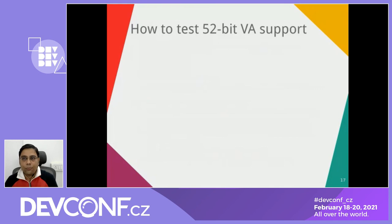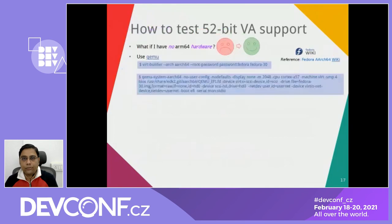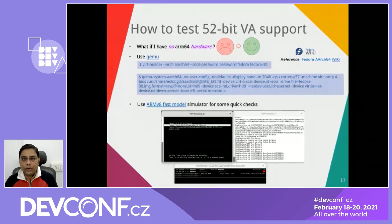If you want to test 52-bit virtual address support without real ARM64 hardware, simulation is your friend. The first option is QEMU — you can run a QEMU ARM64 guest on an x86 host; using the virt-builder tool you can create a Fedora 30 ARM64 guest and launch it with QEMU. The second option is the ARMv8 Fixed Virtual Platform fast simulator model, downloadable freely from the ARM website, which can run Linux, Debian, or Fedora ARM64 images.